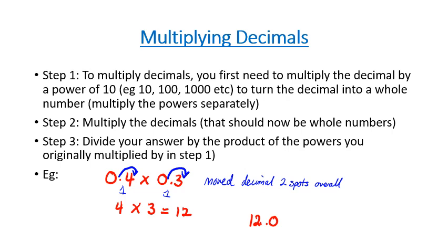Considering we moved the decimal two spots to start with, we now need to move the decimal point two spots back. So we've moved it two spots back, and therefore our total answer is going to be 0.12. Remember: however many times you move the decimal place to the right at the start, at the end when we move it back to the left, we've got to move it the total number of spots again.